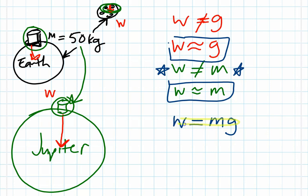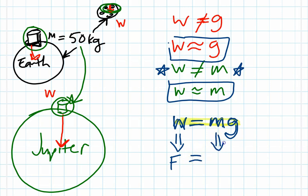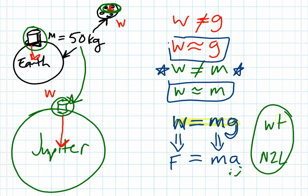To make you feel more comfortable with what seems like a new concept today, consider that you've actually been working with this formula — weight is mass being pulled by a planet's surface — in your dynamics unit. Remember that weight is a force. Force is directly proportional to mass times acceleration. In this case, the acceleration is very specific: acceleration due to gravity. Your formula for weight and Newton's second law are one and the same — it's the exact same concept.